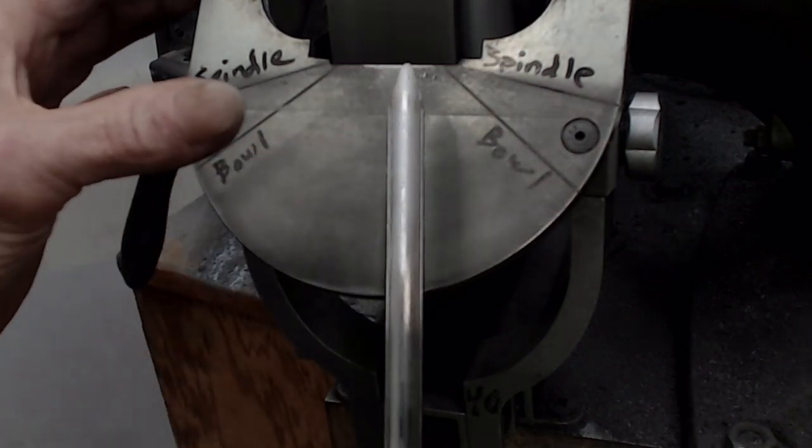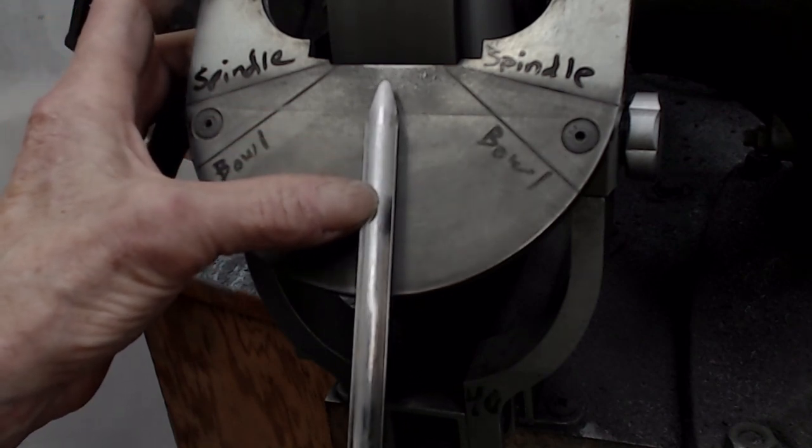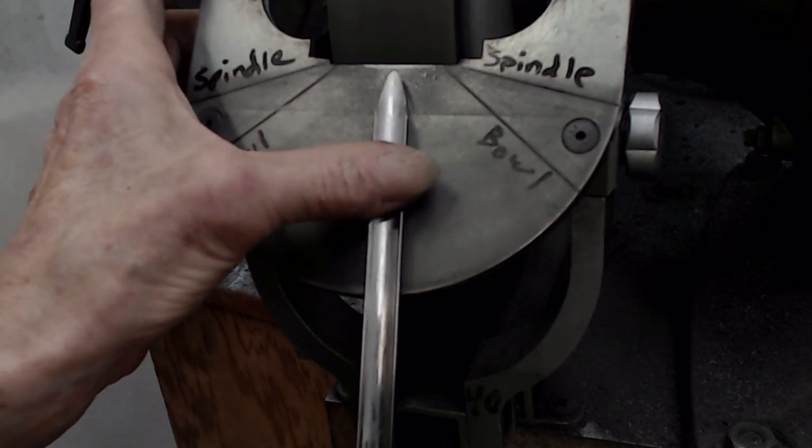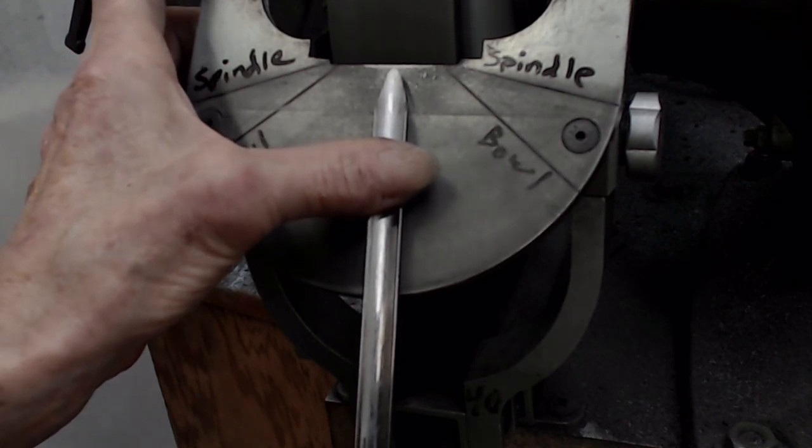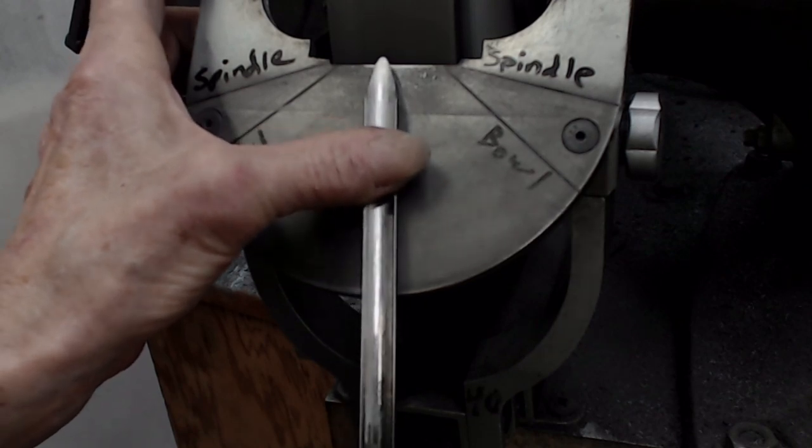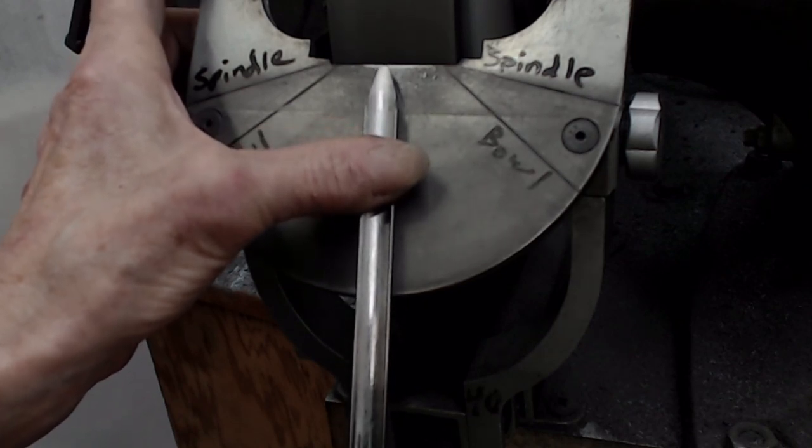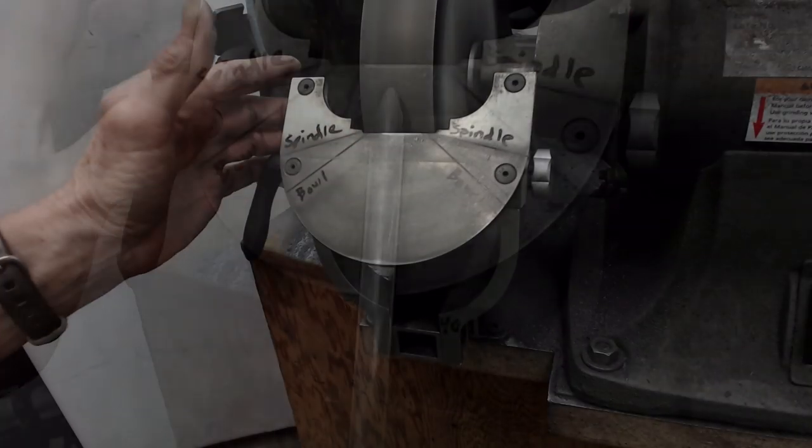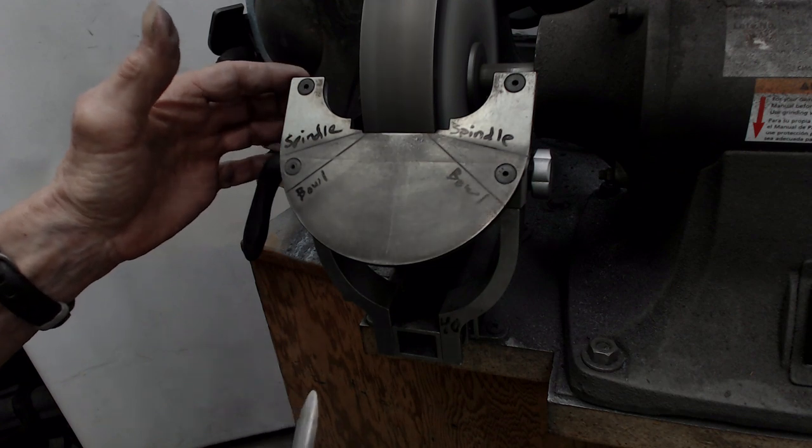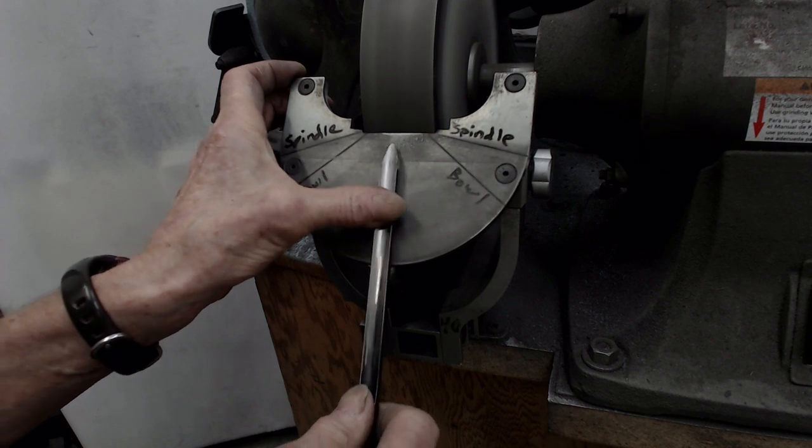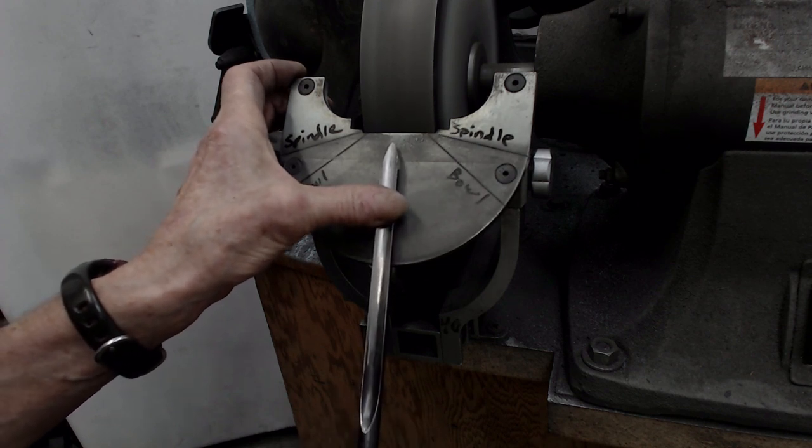The one thing that I need to watch out for most with platform grinding is that I keep the tool firmly on the platform. If I let either end come up off the platform, I'm going to get a different angle than I intended on my cutting edge. I like to hook my finger just around the corner of the platform so that I can use my thumb to put pressure down on the tool.